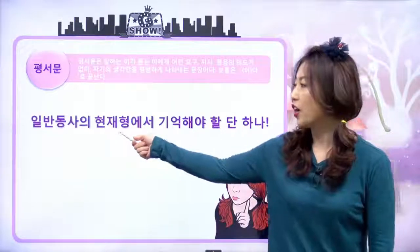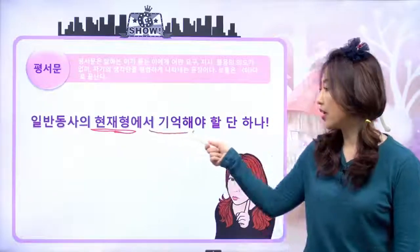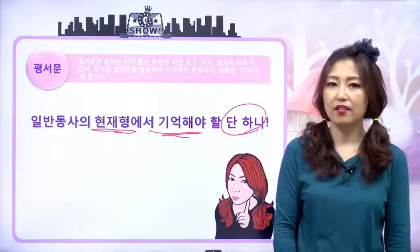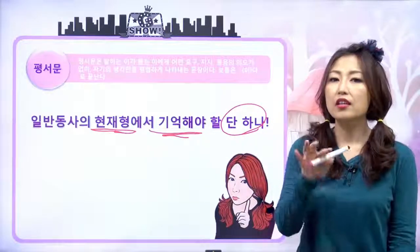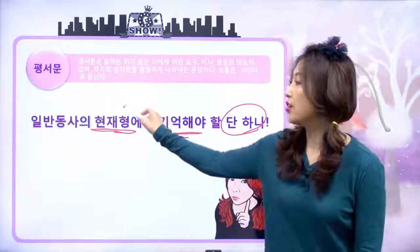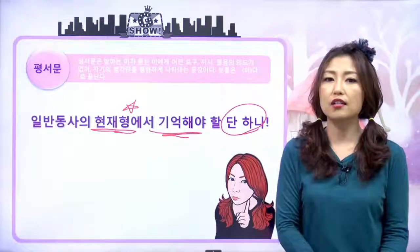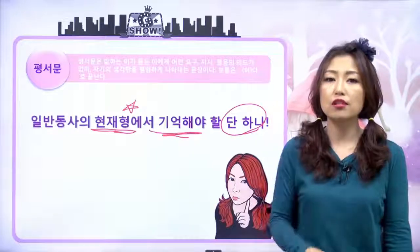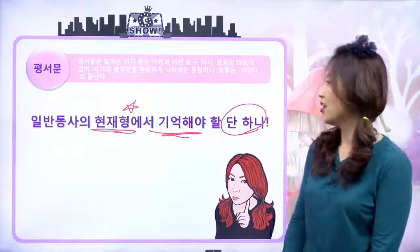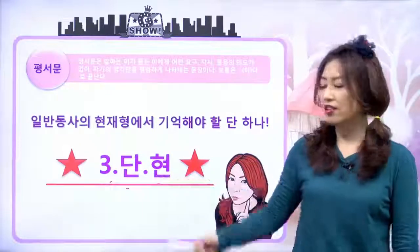일반 동사의 현재형에서 기억해야 할 건 단 하나예요. 일반 동사가 사용된 문장 중에서 특히 현재 시제에서 우리가 기억해야 되는 아주 중요한 사실은 뭐예요? 단 하나. 그게 뭐냐면, 삼단현이에요.